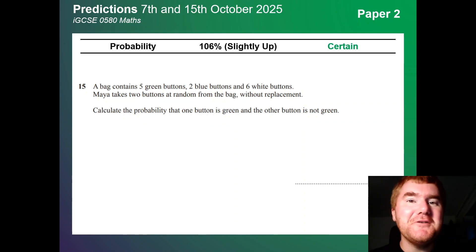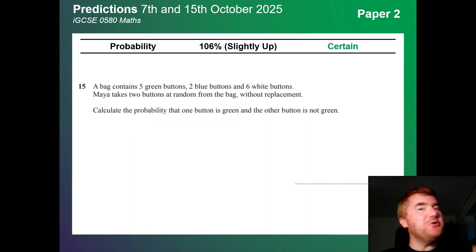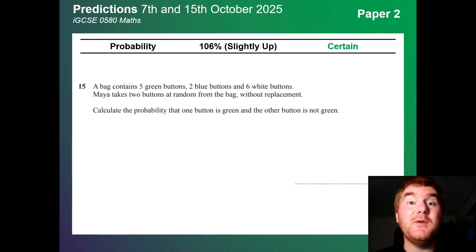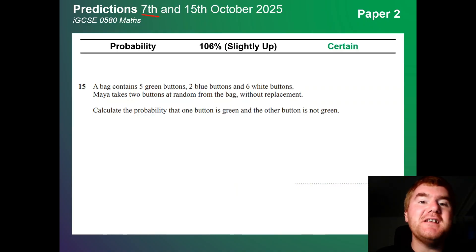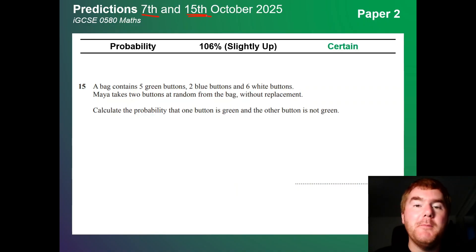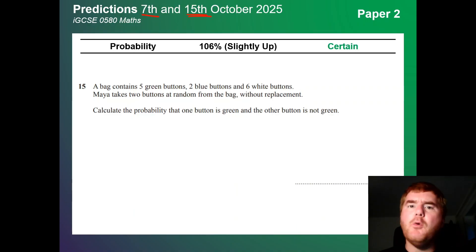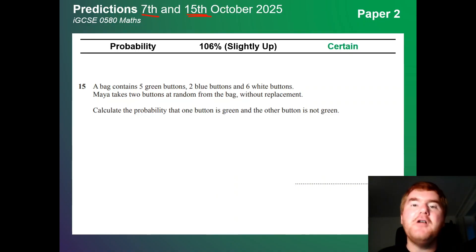Welcome to another Ginger Math Petition video. This is my IGCSE 0580 Maths Predictions for the October exams 2025 — Paper 2 on the 7th and Paper 4 on the 15th of October. I'm going to go through what topics really do appear, what changes have happened, and give you a complete breakdown of the frequency of topics so you know exactly what to revise.